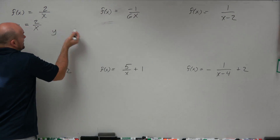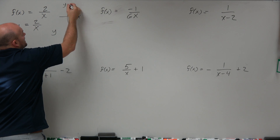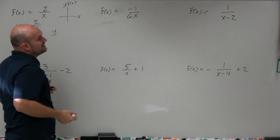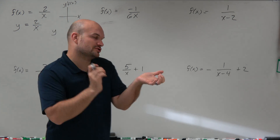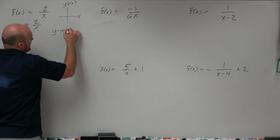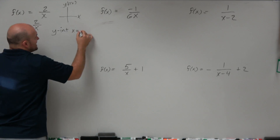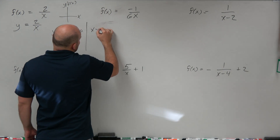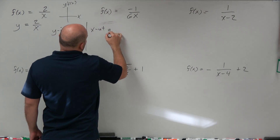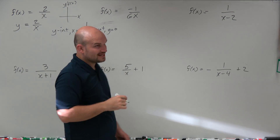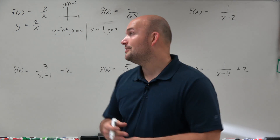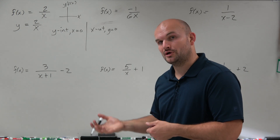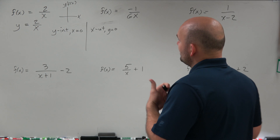Just remember, if you have the x-axis and the y-axis — or if it's a function, the f of x-axis — y and f of x are interchangeable. So when looking for the y-intercept, just make x equal to 0 and then solve for y. When you're trying to find the x-intercept, just put 0 in for y and solve for x. That's all we have to do.